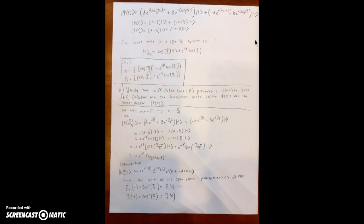Part B asks us to verify that a pi pulse, which is omega 1 times t equals pi, produces a complete spin-flip. We calculate both the transformed state vector and the state vector. We know that pi pulse is defined as omega 1 times t equals pi, so this tells us that t is equal to pi over omega 1.